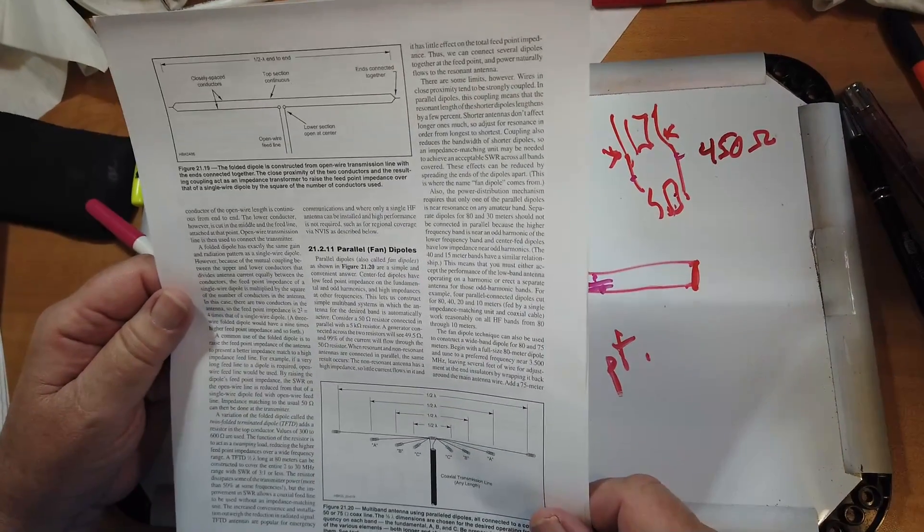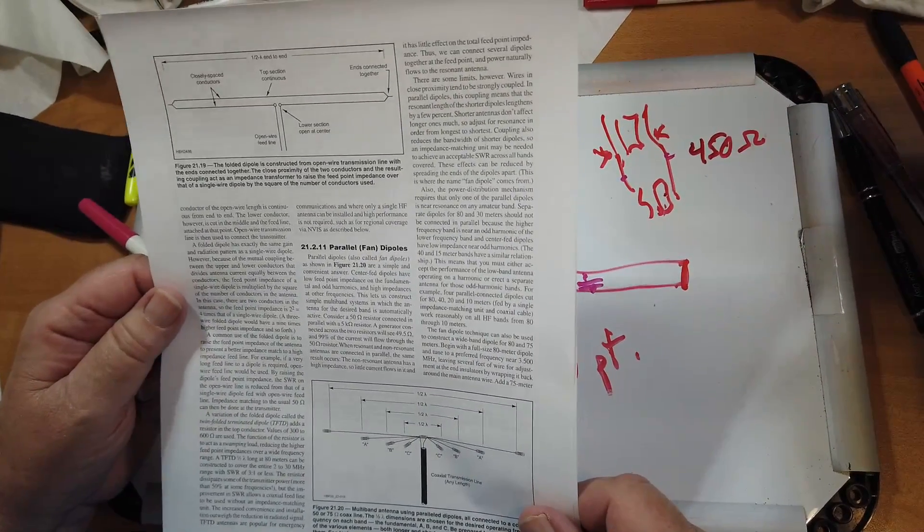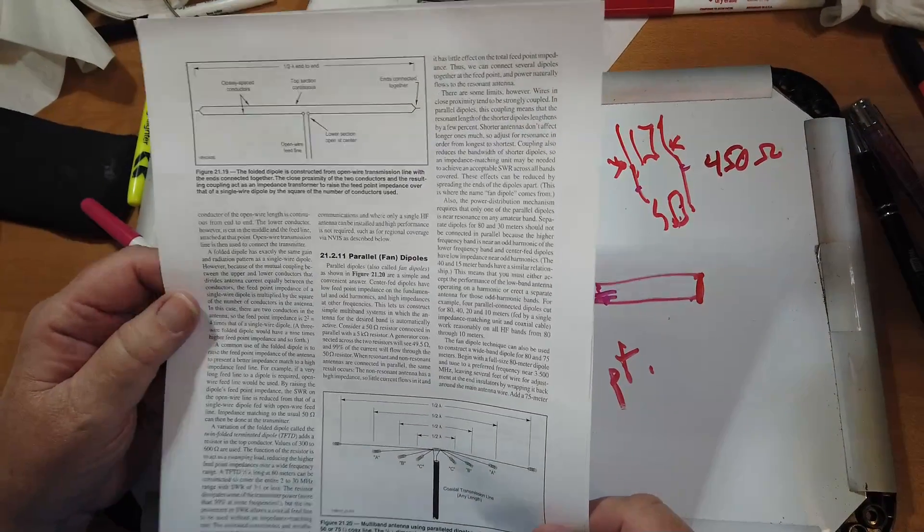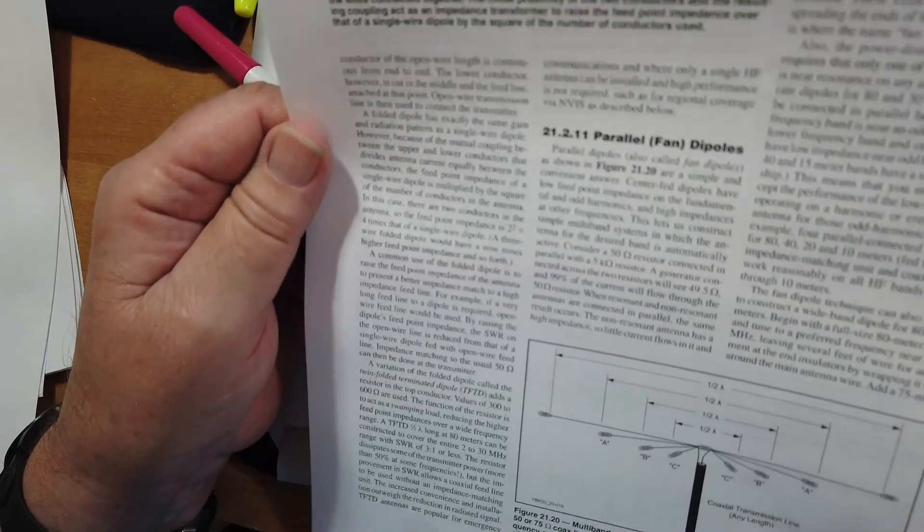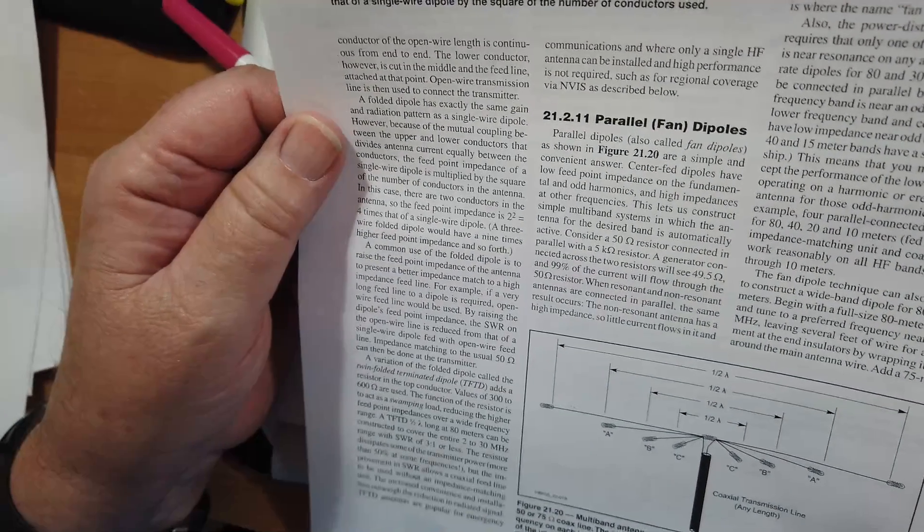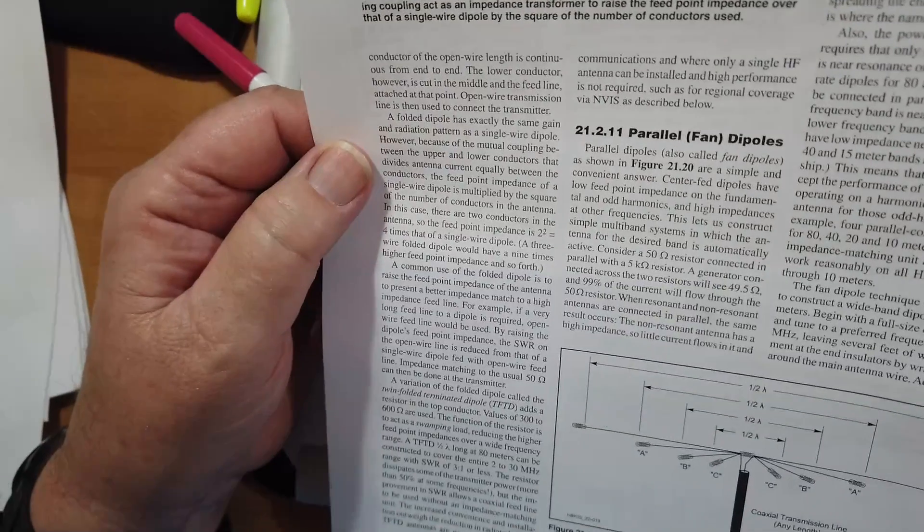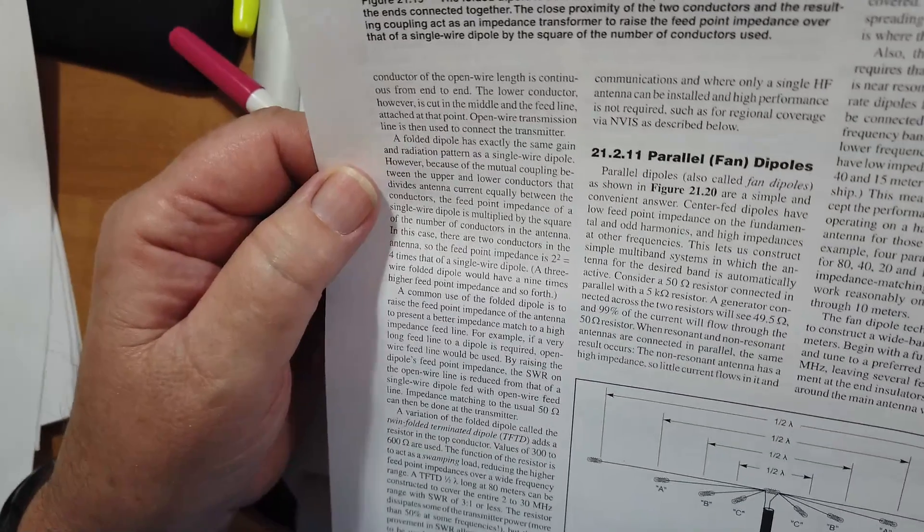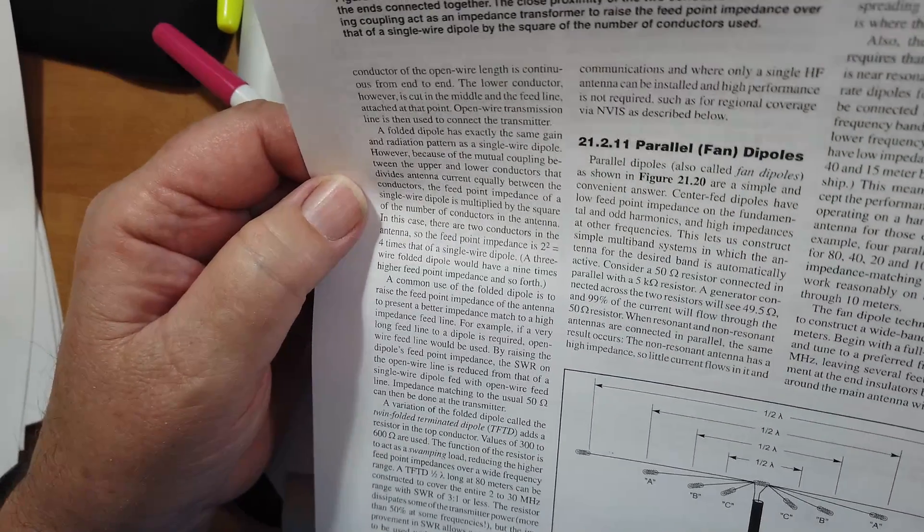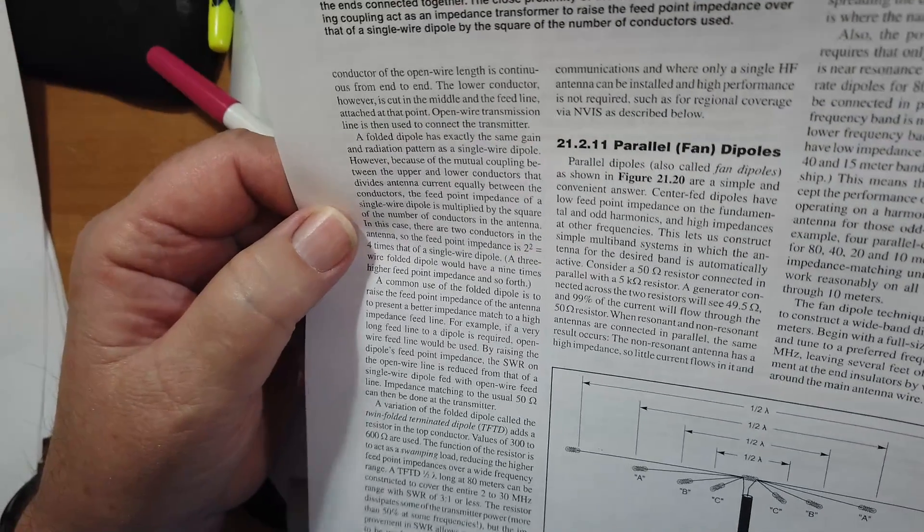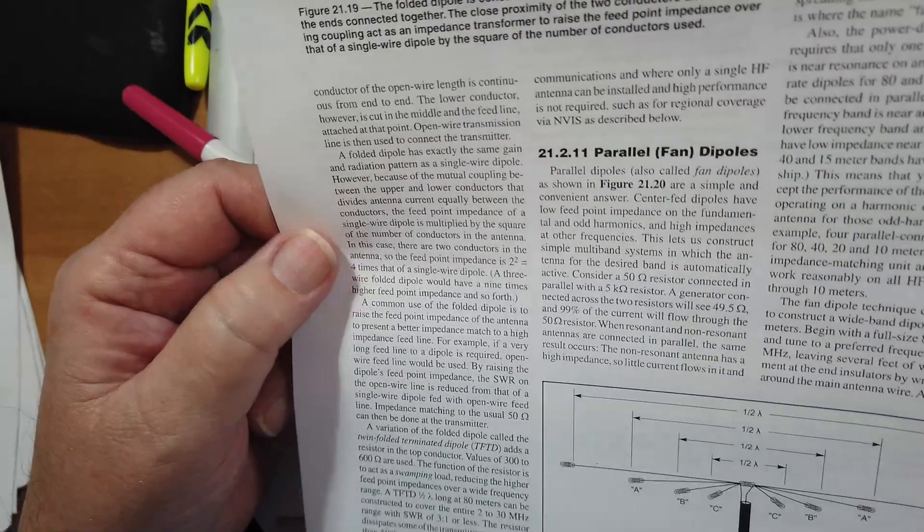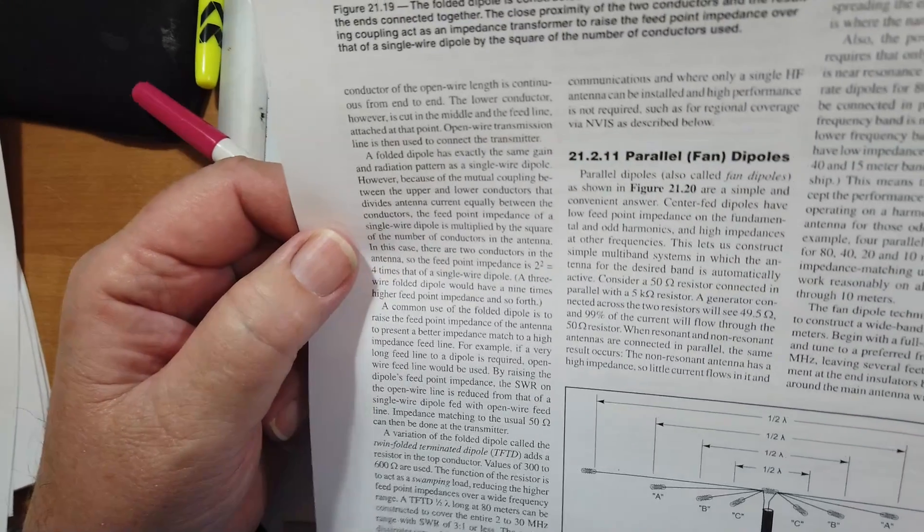A folded dipole has exactly the same gain and radiation pattern as a single wire dipole. However, because of the mutual coupling between the upper and lower conductors that divides antenna current equally between the conductors, the feed point impedance of a single wire dipole is multiplied by the square of the number of conductors in the antenna.